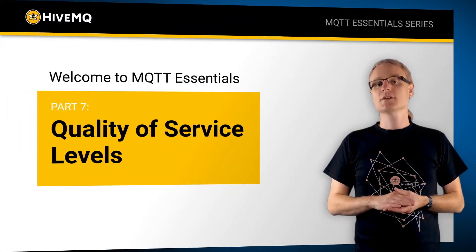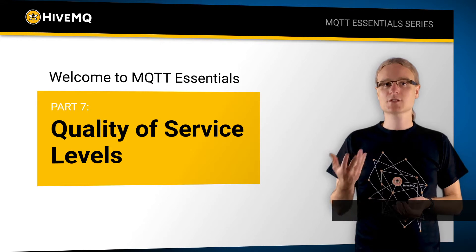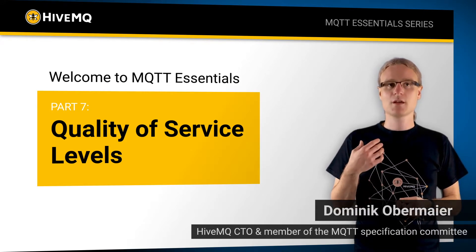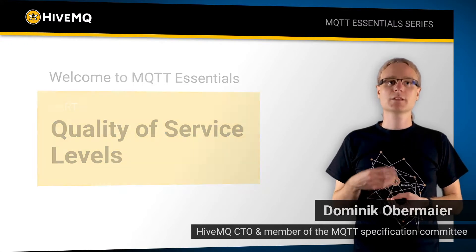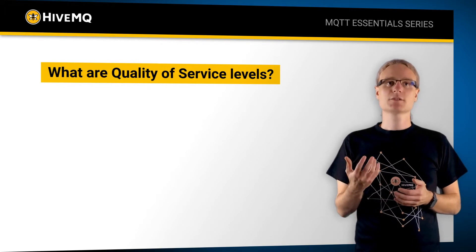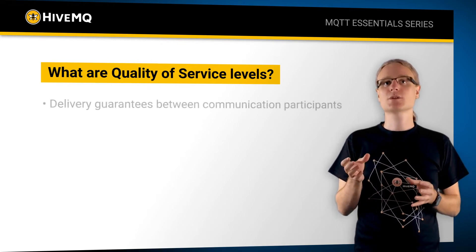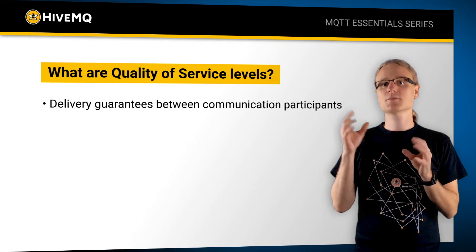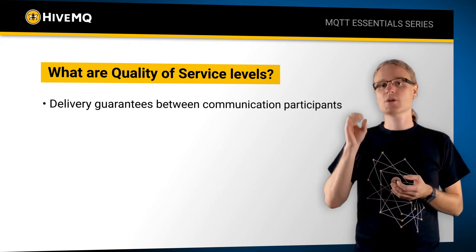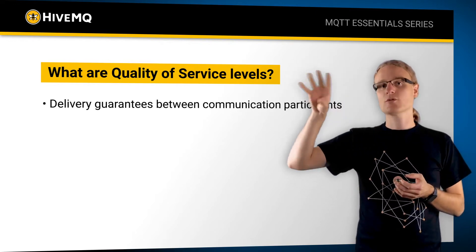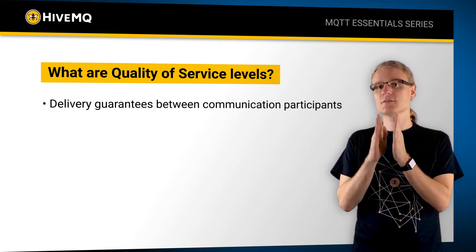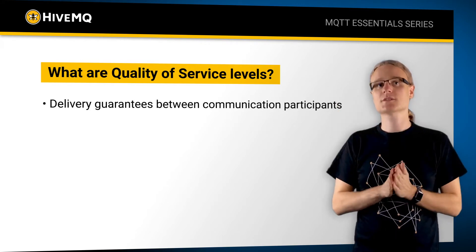Welcome back to the MQTT Essentials video series. In this chapter, we are going to talk about quality of service levels. Quality of service levels are guarantees between communication participants and the delivery of their messages. For example, we have a client and a broker, or a broker and a client, and we really talk about the guarantees for sending and receiving messages between these participants.